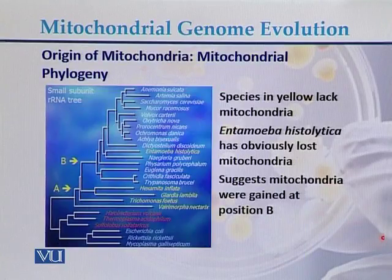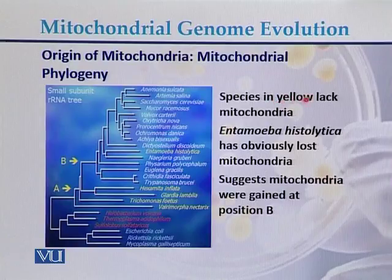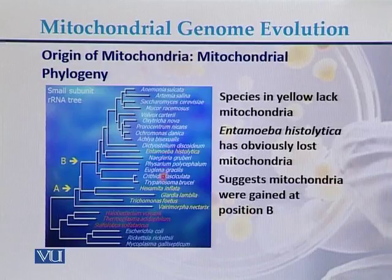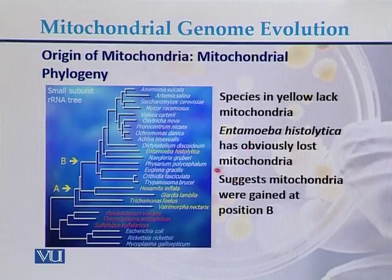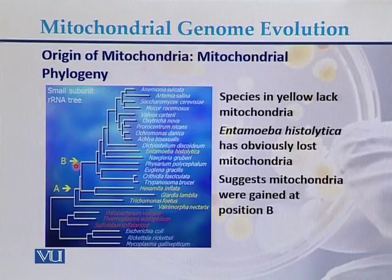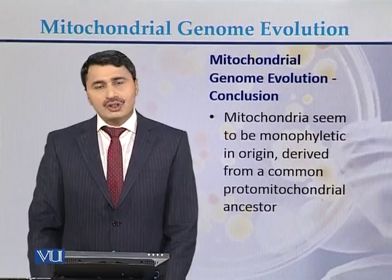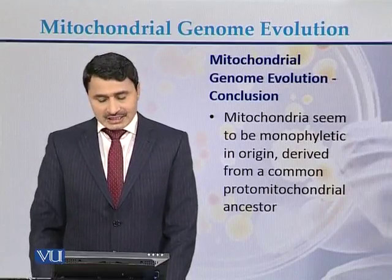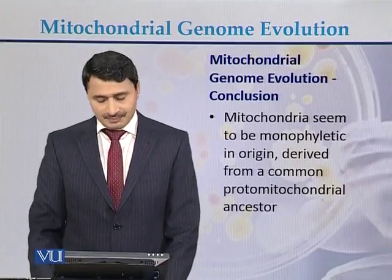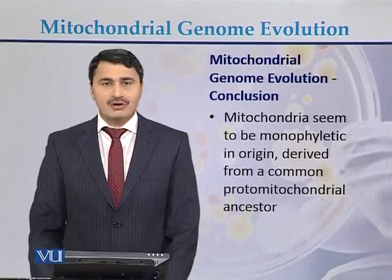Regarding the origin of mitochondria, this phylogenetic analysis shows species highlighted in yellow that lack mitochondria, including Amoeba. The analysis suggests that mitochondria were gained at position B in the phylogeny. In conclusion, mitochondria appear to be monophyletic in origin, derived from a common proto-mitochondrial ancestor.